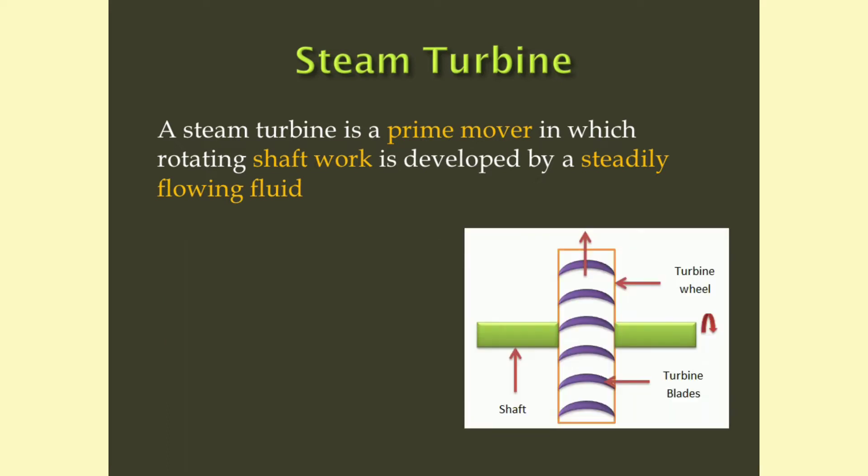Now, look at the figure. Here, turbine blades are attached on the periphery of a wheel. The working fluid is steam, and when steam flows through these turbine blades, due to change in momentum, a force develops. The turbine rotates and shaft work is produced. So, steam turbine is a prime mover in which rotating shaft work is developed by a steady flowing fluid.